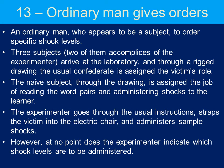The first variation is when an ordinary man gives orders. An ordinary man who appears to be a subject is the one who directs the instructions to deliver the electric shock. There are three subjects: two of them are confederates who are in on the experiment. The rigged drawer is exactly the same, ensuring that the participant will always be the teacher — the naive participant always has to read the word pairs and administer the shocks to the learner.